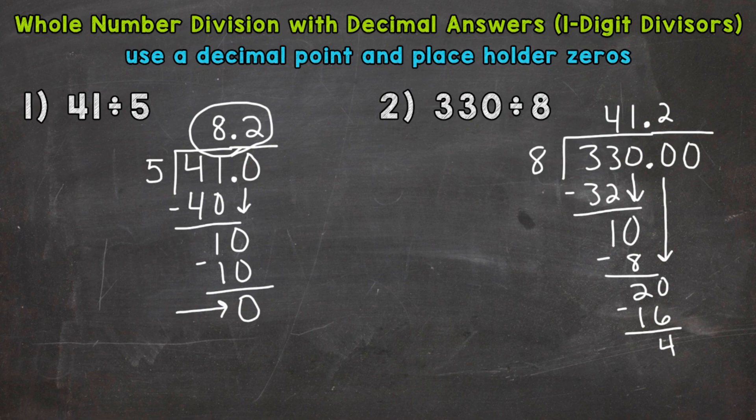This still isn't changing the value of the problem. So we are now able to bring this zero down and continue our process. So we have 40 divided by 8. How many whole eights out of 40? Well, 5. And that hits 40 exactly. So 5 times 8, 40. Subtract, and we get that zero. And that lets us know that we are done. So our answer is 41 and 25 hundredths.